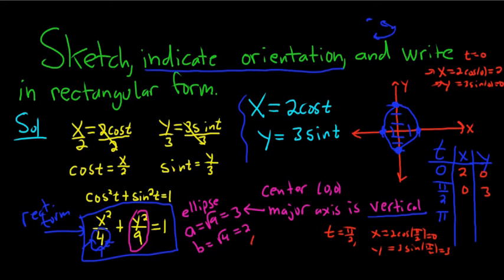And last but not least, when t is equal to pi, we get x equals 2 cosine pi. Cosine pi is negative 1, so we get negative 2. And then sine pi is 0, so we get 0. Did that really, really fast. Just rushing through it, sorry.